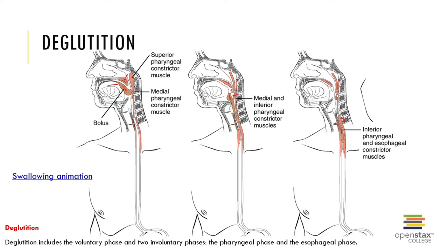The first phase of swallowing is the buccal phase, and that phase is voluntary — we control our chewing at that point. Then we have the pharyngeal phase, which is involuntary, and that's where the autonomic nervous system starts to pick that information up. Then we have the esophageal phase, which is also an involuntary phase.